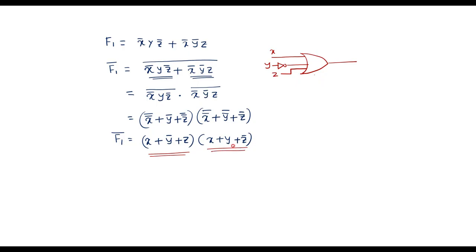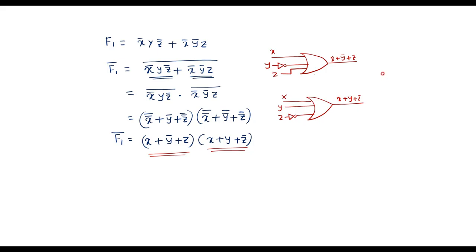Now let me draw the second term. I take another three-input OR gate. Inputs are x, y, and z passed through an inverter to get z̄. So the output is x plus y plus z̄. Now we connect these two OR gates using an AND gate. The output of the first OR gate and the output of the second OR gate are connected to the AND gate, giving f1 bar as the final output. This is the circuit diagram for the first function.